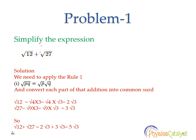So if we add both expressions, then we get 2 root 3 plus 3 root 3, which is equal to 5 root 3. This is how we can simplify this expression.